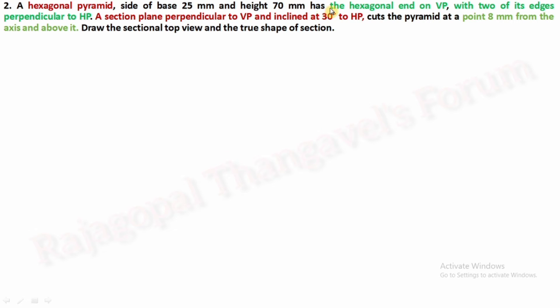Hexagonal pyramid, side of base 25 mm and height 70 mm, has the hexagonal end on VP. In the previous question it rested on HP with two of its edges perpendicular to HP. A section plane perpendicular to VP and inclined at 30 degrees to HP cuts the pyramid at a point 8 mm from the axis and above it. Draw the sectional top view and the true shape of section.